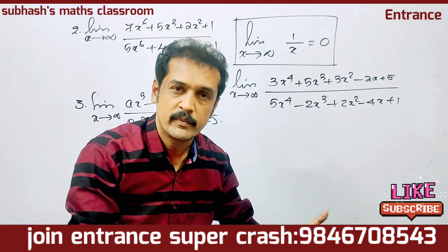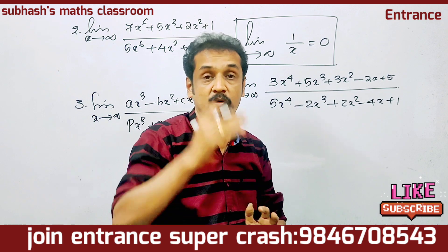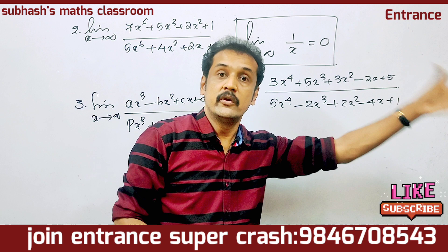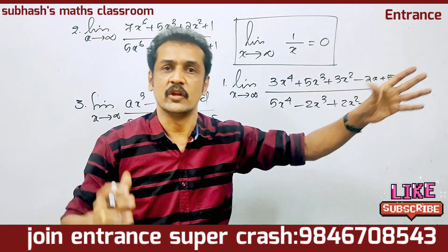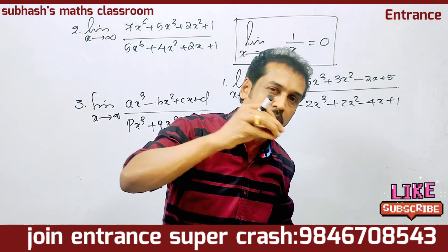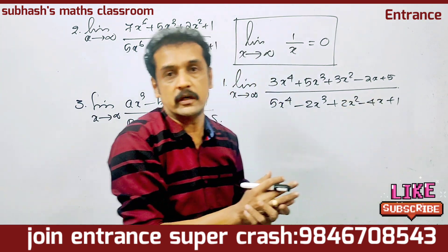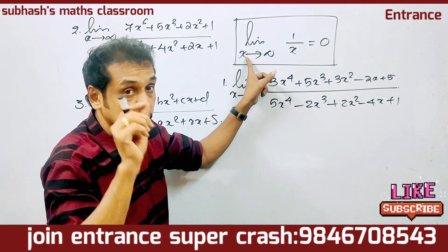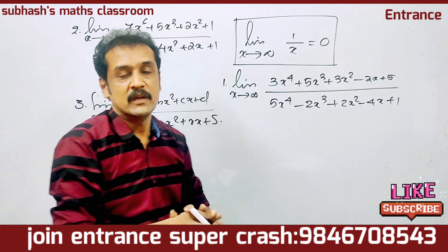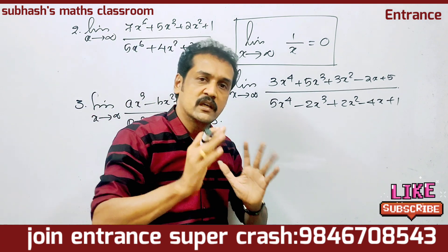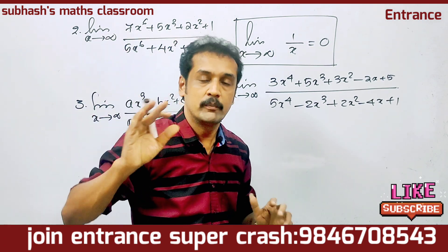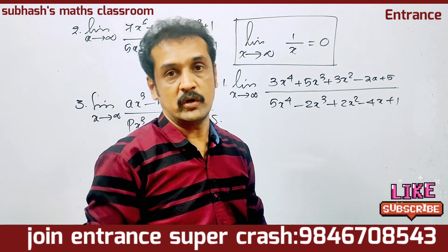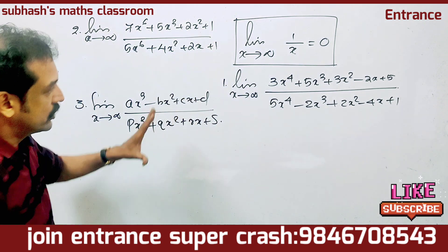1 by 3 is equal to 0. 1 by 7 is equal to 0. 1 by 9 is equal to 0. 1 by 1000 is equal to 0. The value becomes closer to 0. That means limit x tends to infinity of 1 by x is equal to 0, because as x tends to infinity the number tends to 0.